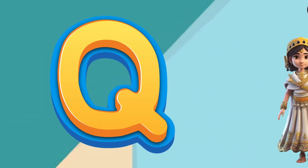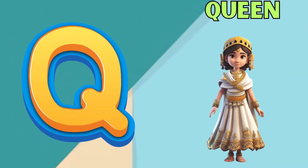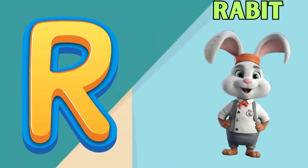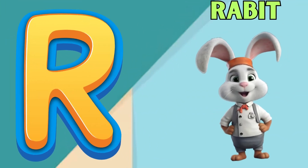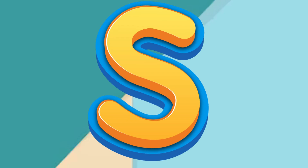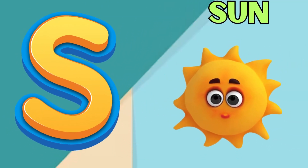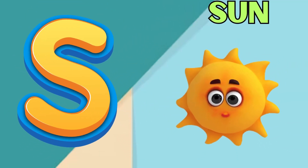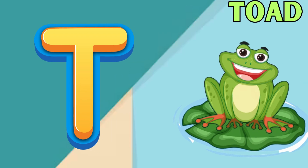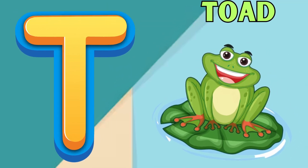Q is for queen, k-k-queen. R is for rabbit, r-r-rabbit. S is for sun, s-s-sun. T is for toad, t-t-toad.